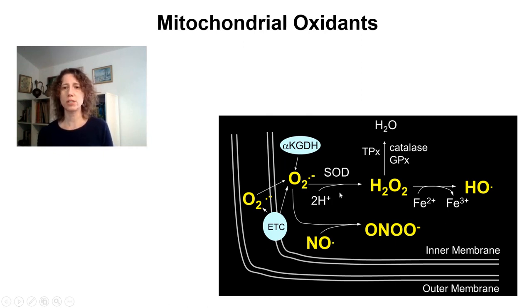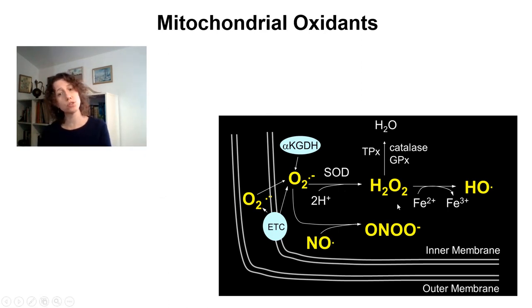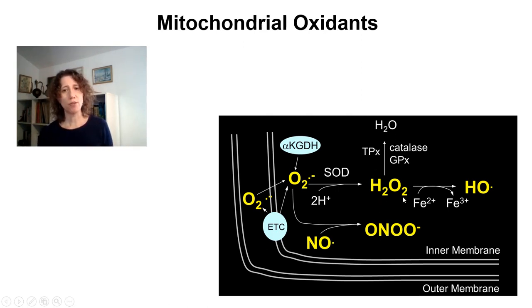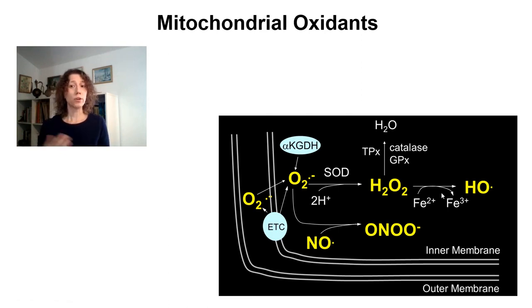Superoxide radicals can be dismutated to produce hydrogen peroxide. Hydrogen peroxide is the main oxidant we detect as a signal of mitochondrial oxygen generation, and the reason we prefer to detect it is because it's much more stable and membrane permeable, so you can detect it from outside mitochondria. We must remove hydrogen peroxide because if it accumulates in the presence of iron, it can generate hydroxyl radicals through the Fenton reaction — extremely reactive and therefore damaging radicals.